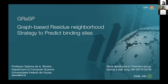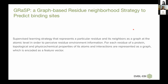I would like to divide this talk into two parts. First, I will talk about how we model the problem of predicting binding sites. I'd like to start by defining what GRASP is — it is a machine learning strategy that represents a particular residue and its neighbors as a graph at the atomic level, in order to perceive some residue environment information.